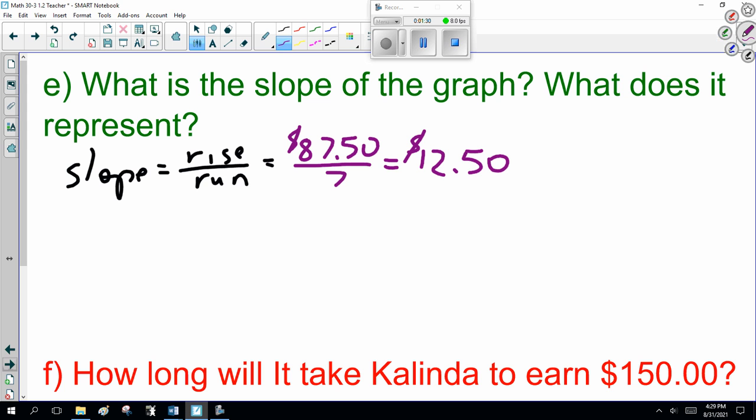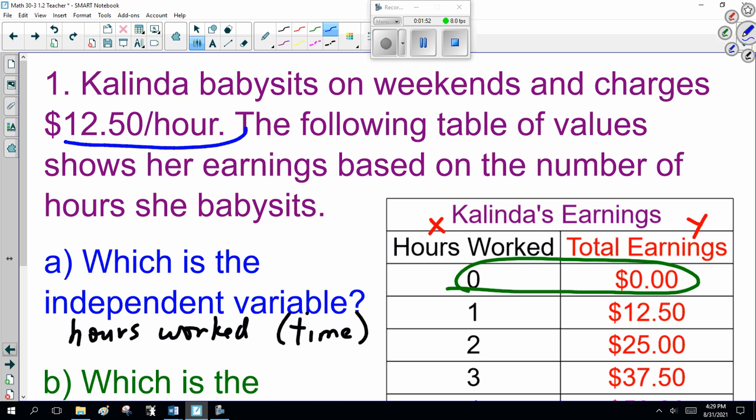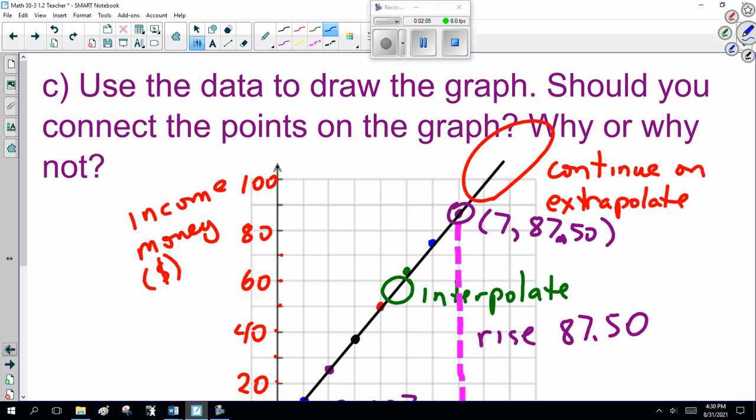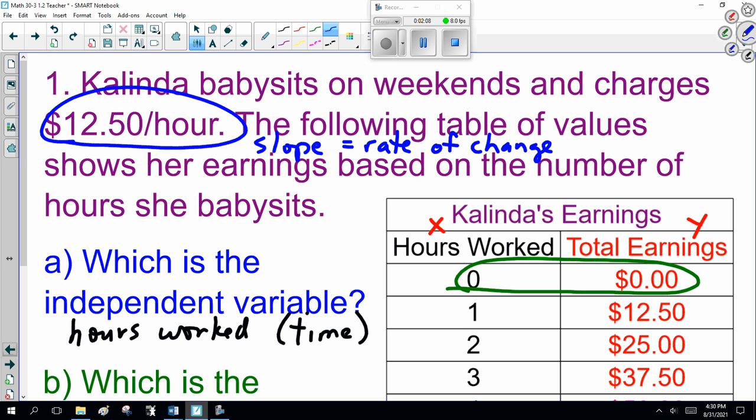Which by the way, we didn't have to do that much work. We really should have looked at the graph and went, oh wait a minute, that slope is the rate of change which is 12.50 per hour. Like I said right back here, that is the slope of the graph.